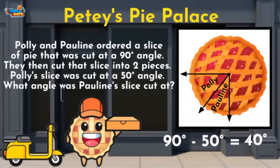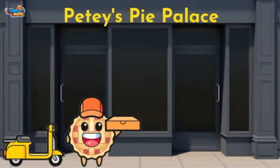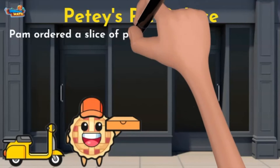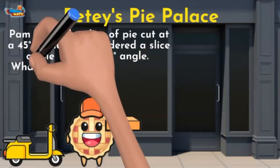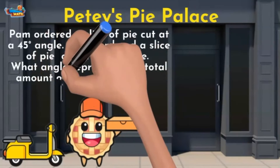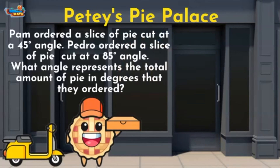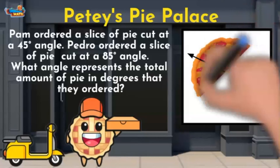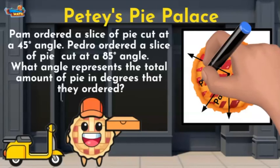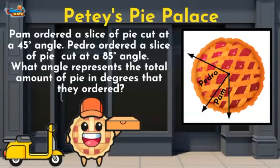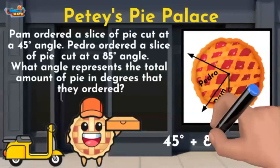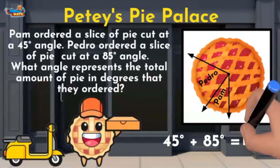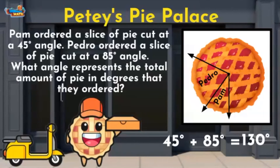Those two pie princesses are taken care of. Here's the next order. Pam ordered a slice of pie cut at a 45-degree angle. Pedro ordered a slice of pie cut at an 85-degree angle. What angle represents the total amount of pie in degrees that they ordered? Here's a little pie diagram to help — here is Pam's slice and here is Pedro's slice. To find out the total angle cut, I can add Pam's slice, 45 degrees, and Pedro's slice, 85 degrees. That equals 130 degrees. That's quite the piece of pie!